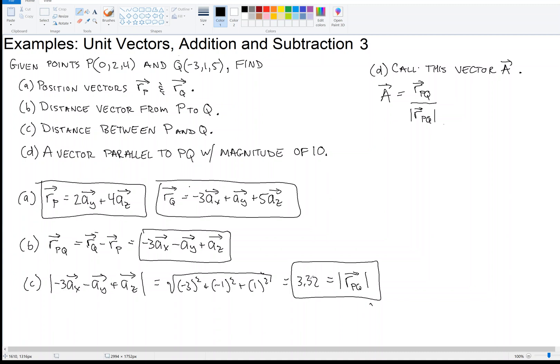And we divide it by the length of that vector. Oh, we already have that, too, 3.32, right? So now that's a unit vector that points from P to Q.